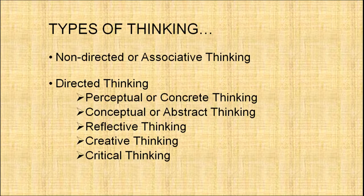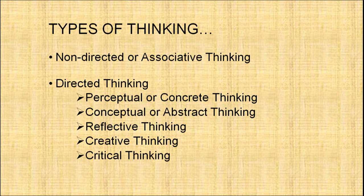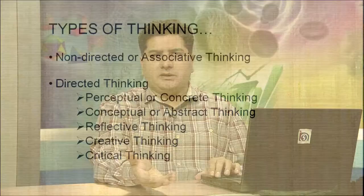Another classification divides thinking into two broader categories: non-directed or associative thinking, similar to Zimbardo and Rook's autistic thinking, and directed thinking, similar to realistic thinking. Non-directed or associative thinking includes daydreaming, delusions, or fantasizing — it is without any purpose or goal, which is why it is called non-directed. Directed thinking, on the other hand, is always associated with some goals.